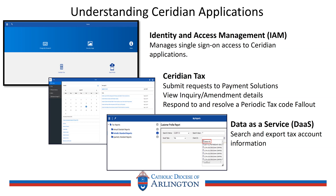From the Serenian Tax site, you will go to submit requests for payment solutions, view inquiries and amendment details, and respond to and resolve periodic tax code fallout notifications. The third application, which is Data as a Service, or DOS, is where you'll go to run and export reports for tax account and funding information, and access, view, and download quarterly tax statements. Cindy will now go over Identity and Access Management, or IAM, and how to log in as a first-time user.